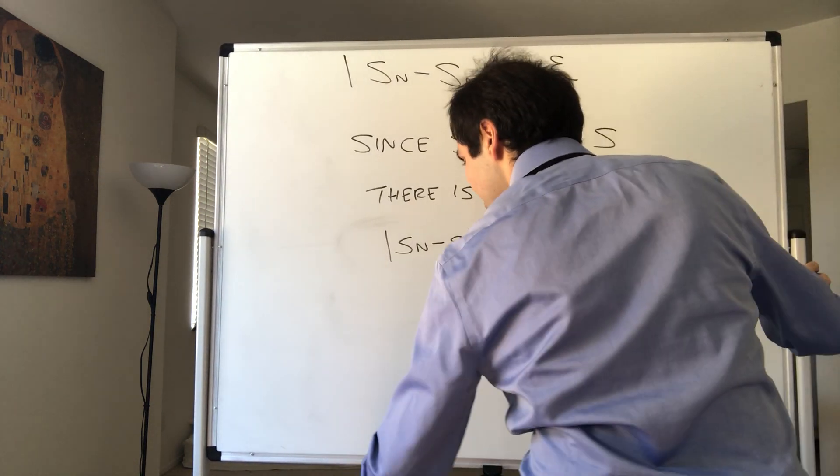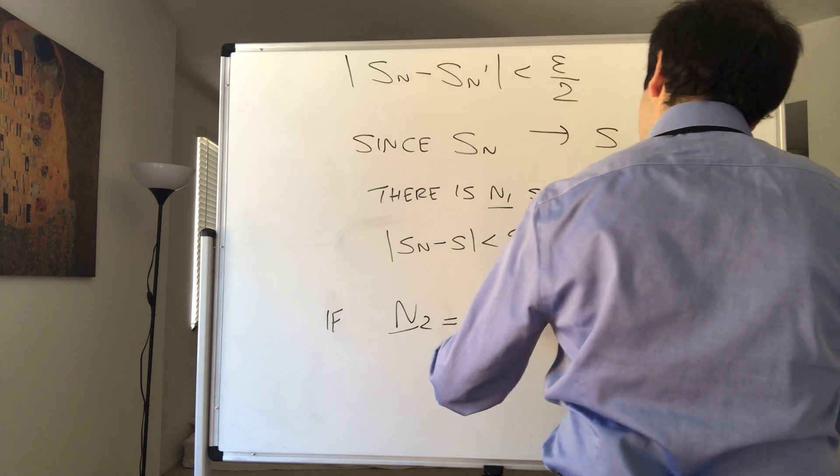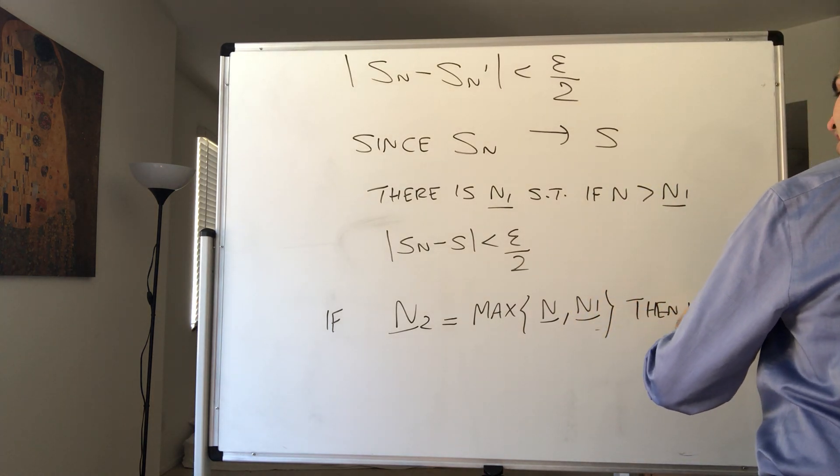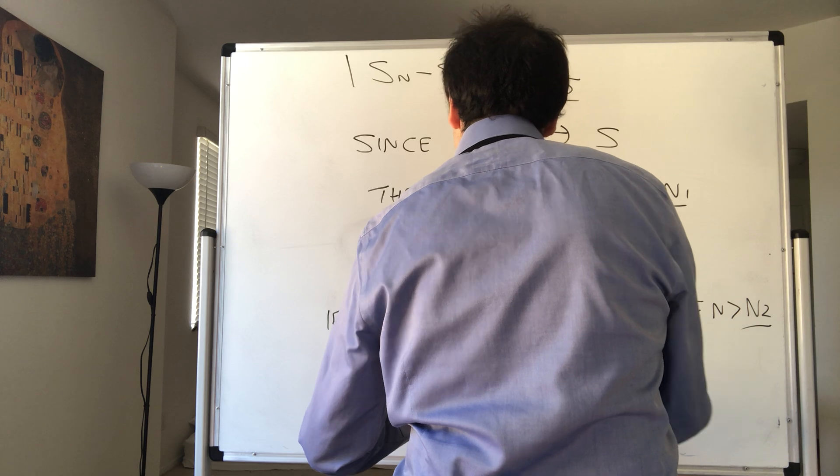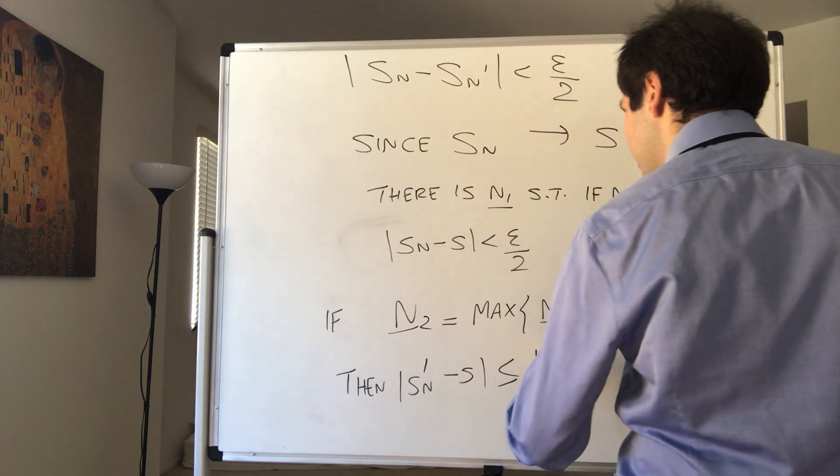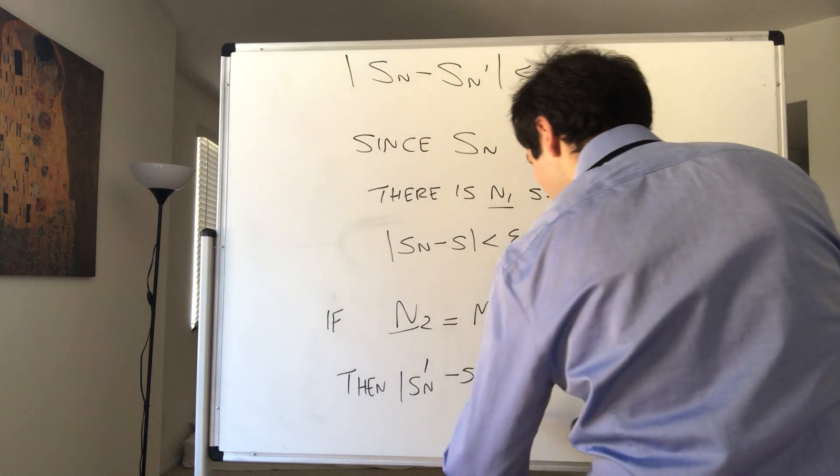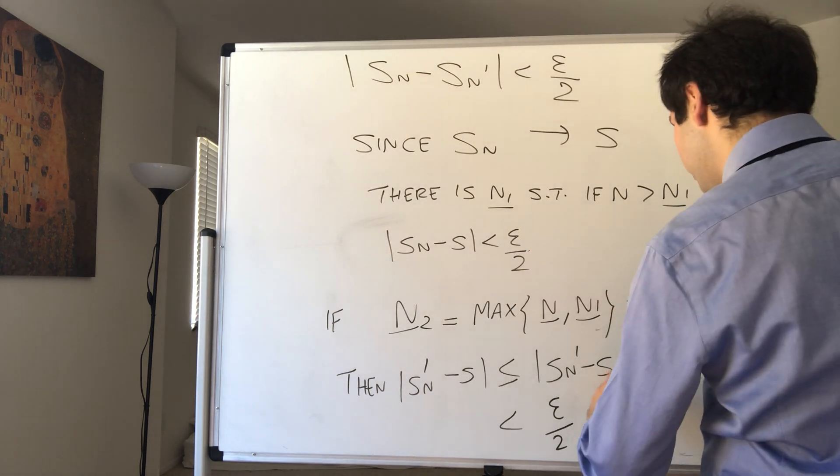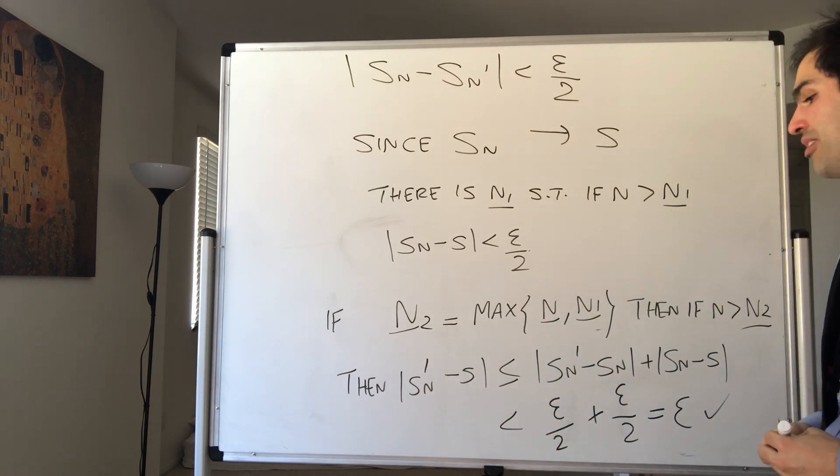If capital N2 is the maximum of capital N and capital N1, then if n is bigger than capital N2, then the difference between S'_n and S is less than or equal to |S'_n - S_n| plus |S_n - S|. We know this is less than epsilon over 2, and we've just shown this is less than epsilon over 2. So we get this is less than epsilon.